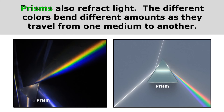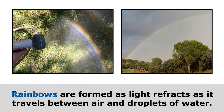So prisms refract light and allow us to see a rainbow. The rainbows that you see outside are formed as light refracts as it travels between air and droplets of water. When light travels from one medium to another, it refracts, and the different colors bend different amounts — and that's why you end up seeing all the different colors.